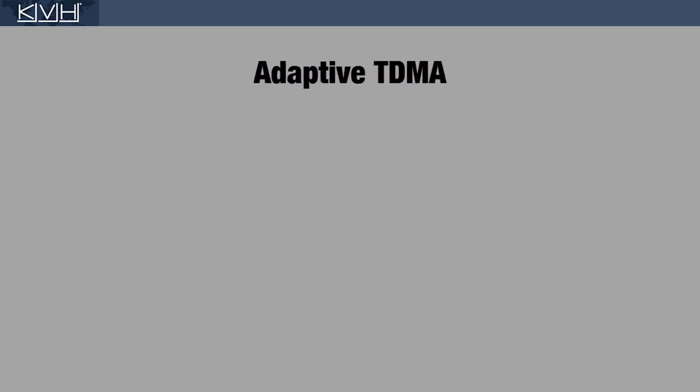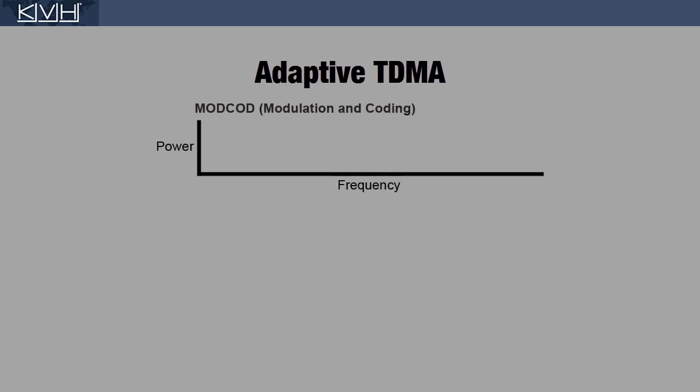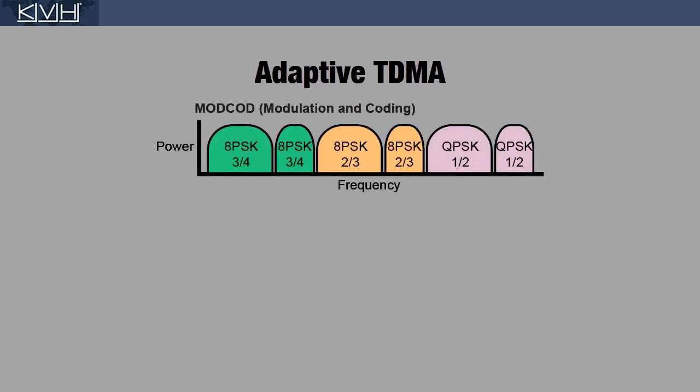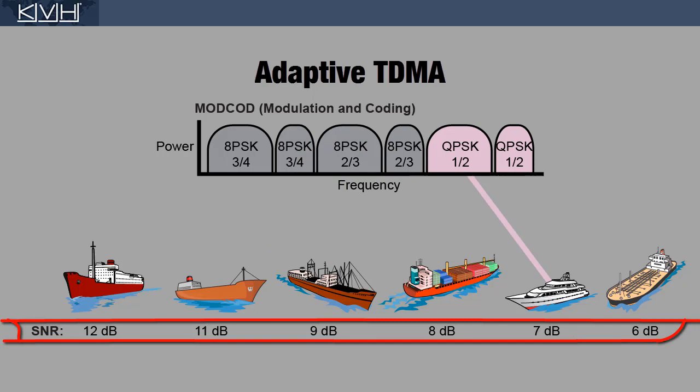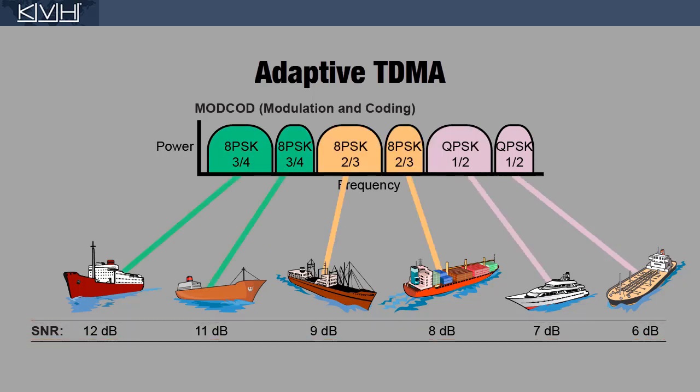With adaptive TDMA, the return link is composed of in-routes that have different combinations of symbol rate, modulation, and coding. For every transmission burst, each vessel can use any available in-route its current signal-to-noise ratio can support. As conditions change, in-routes change dynamically to maintain network availability.